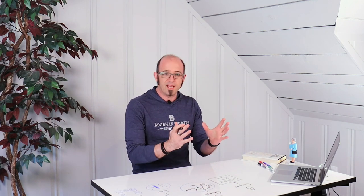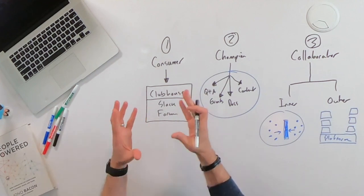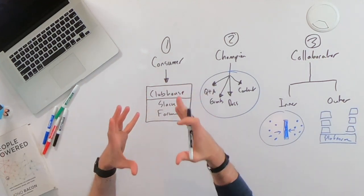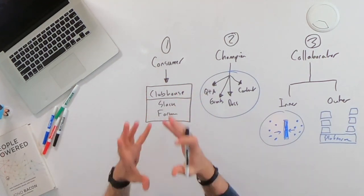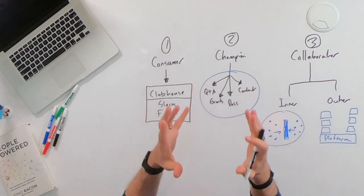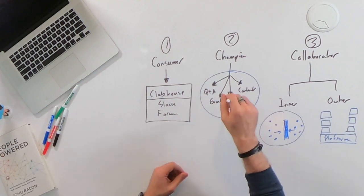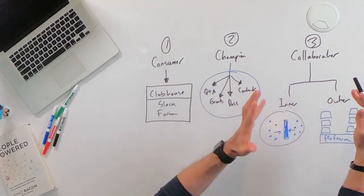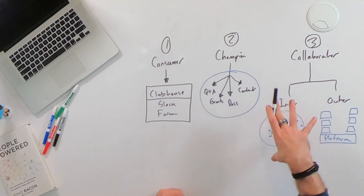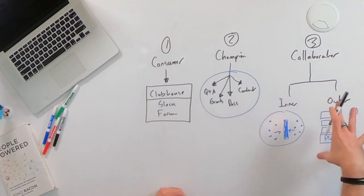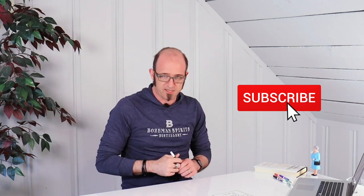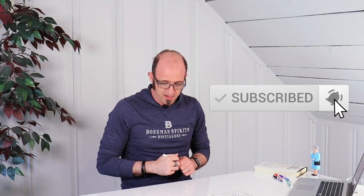Okay, so just to recap, consumer is where people have got the same kind of passion and interest. You're bringing them together into a clubhouse, into a place where they can spend time with each other. The champion is where you go the extra mile, you create an environment where people can create material that is of benefit to the community, and then collaborate is where people build things either as part of the same project, which is an inner, or where they're building things that sit on top of a platform, which is the outer. Makes sense? If this is valuable so far, be sure to go and hit that like the video and then hit that subscribe button so you'll get more of these videos when they come out.